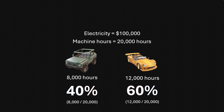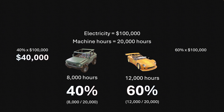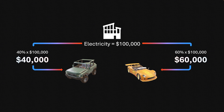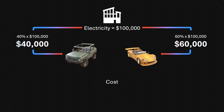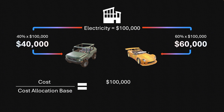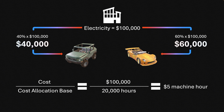This allows us to do some math. 40% × $100,000 = $40,000 allocated to the adventure vehicle. 60% × $100,000 = $60,000 allocated to the sports vehicle. We have effectively taken the electricity cost of $100,000 and divided it over a cost allocation base. If you look at this as a formula, the cost allocation base always goes at the bottom: $100,000 ÷ 20,000 hours gives a rate of $5 per machine hour.